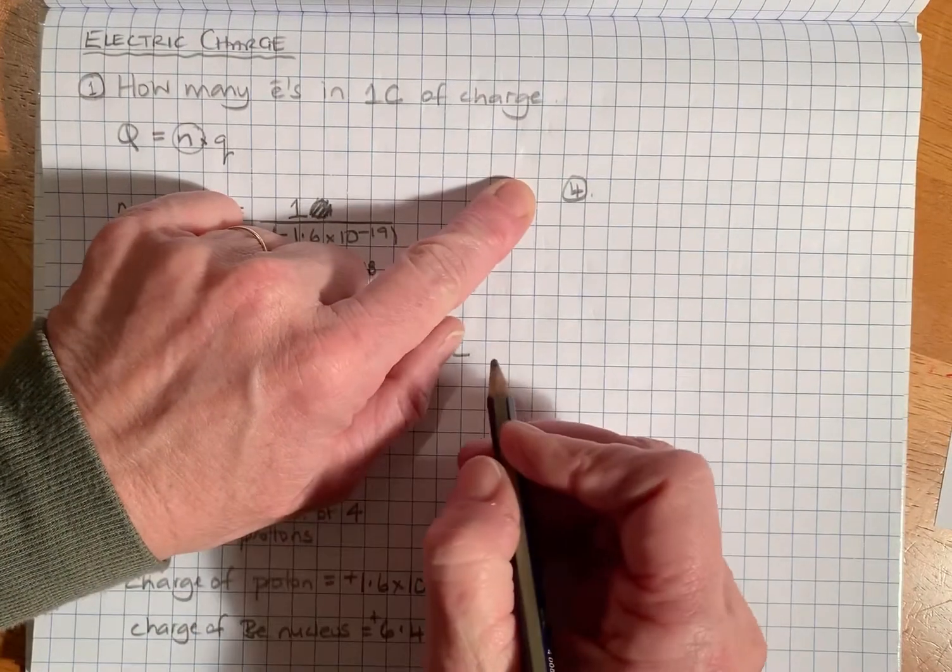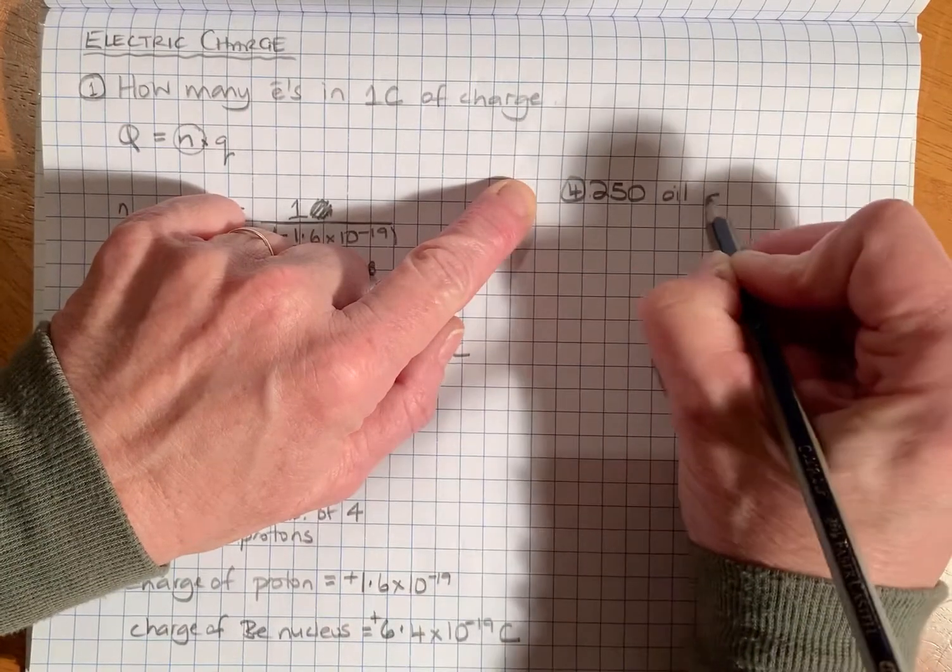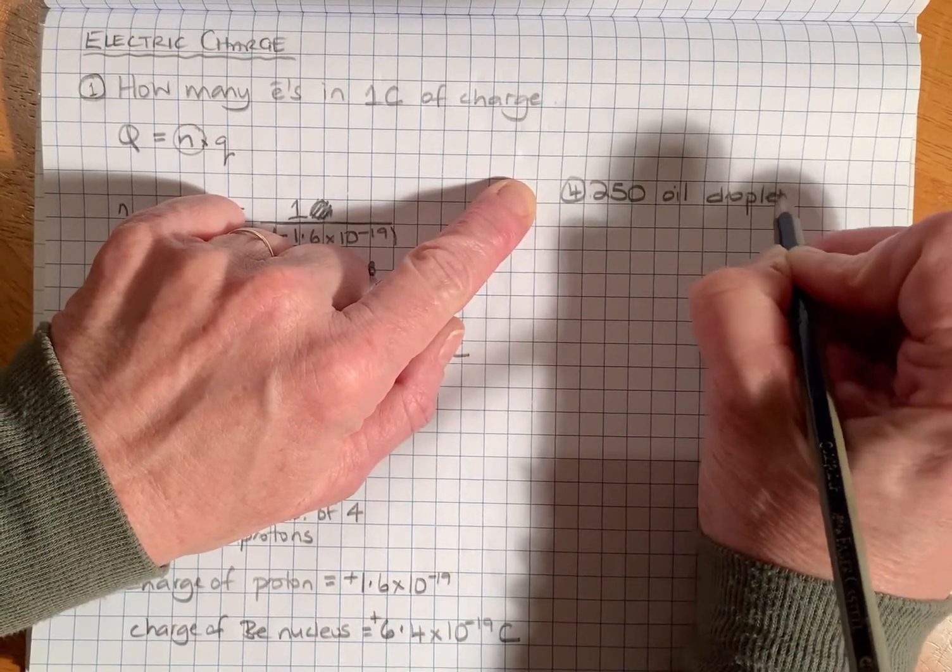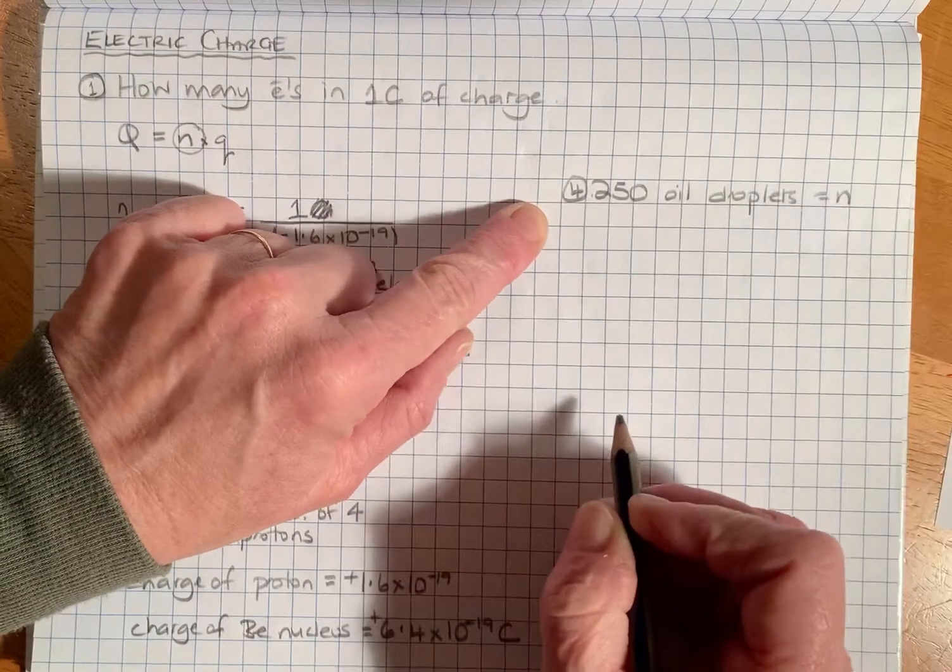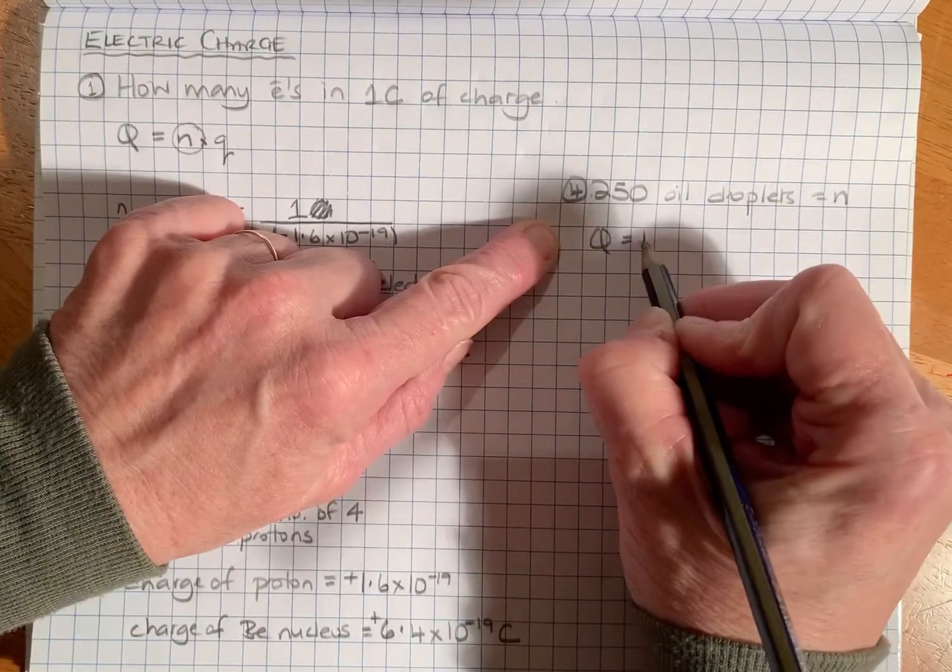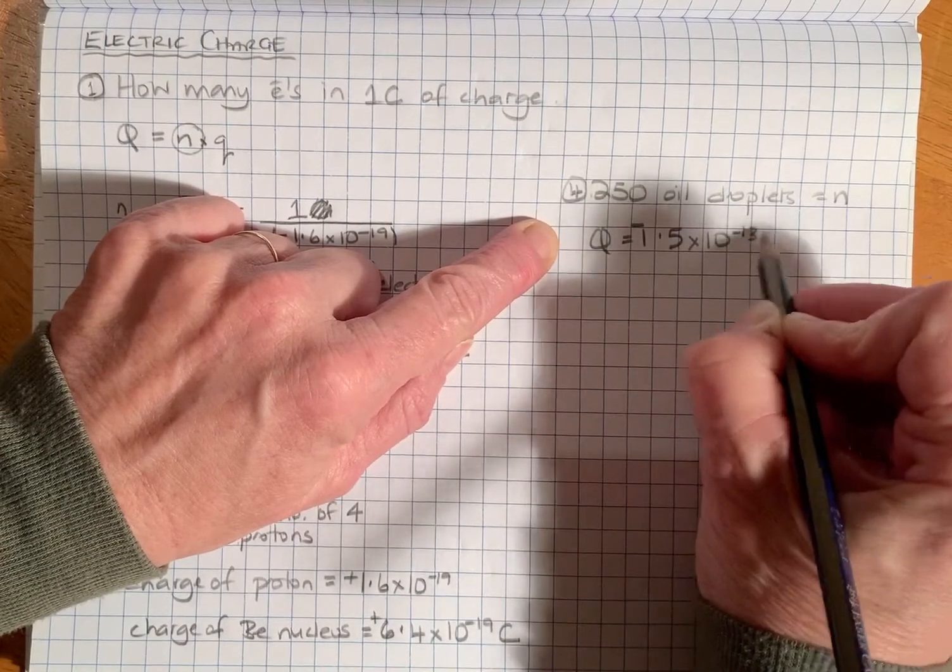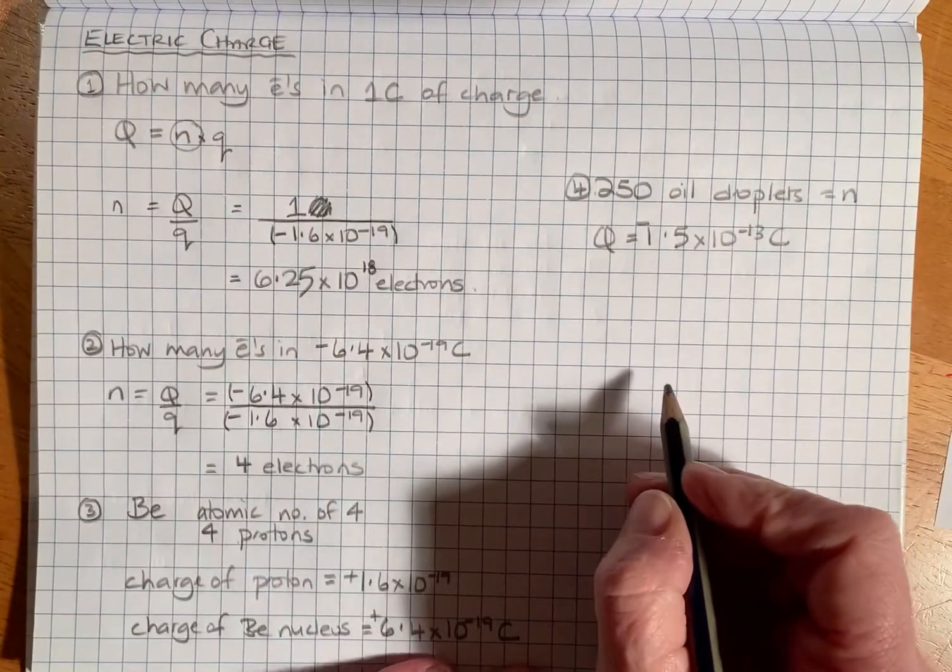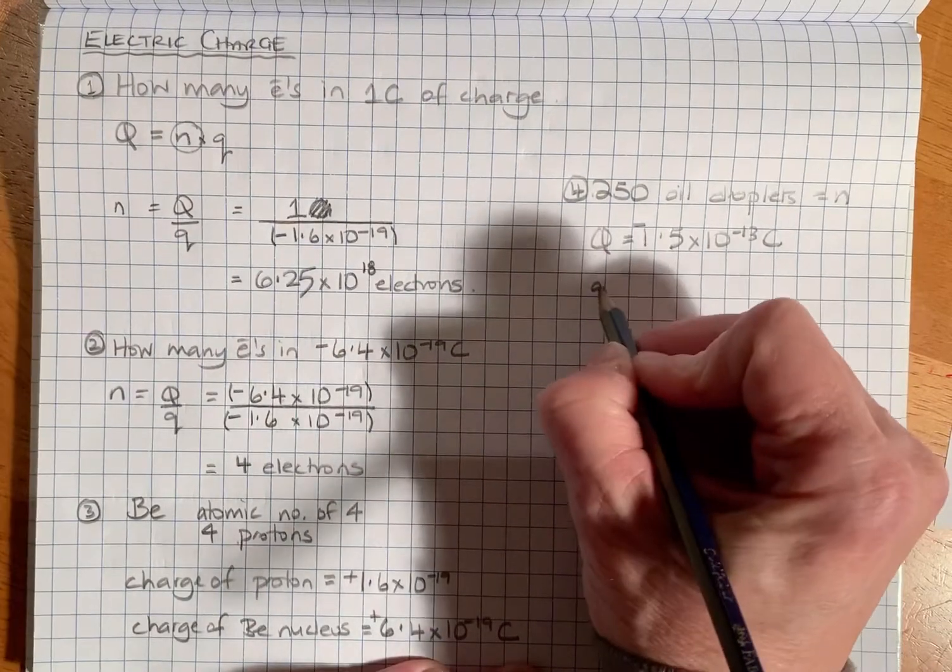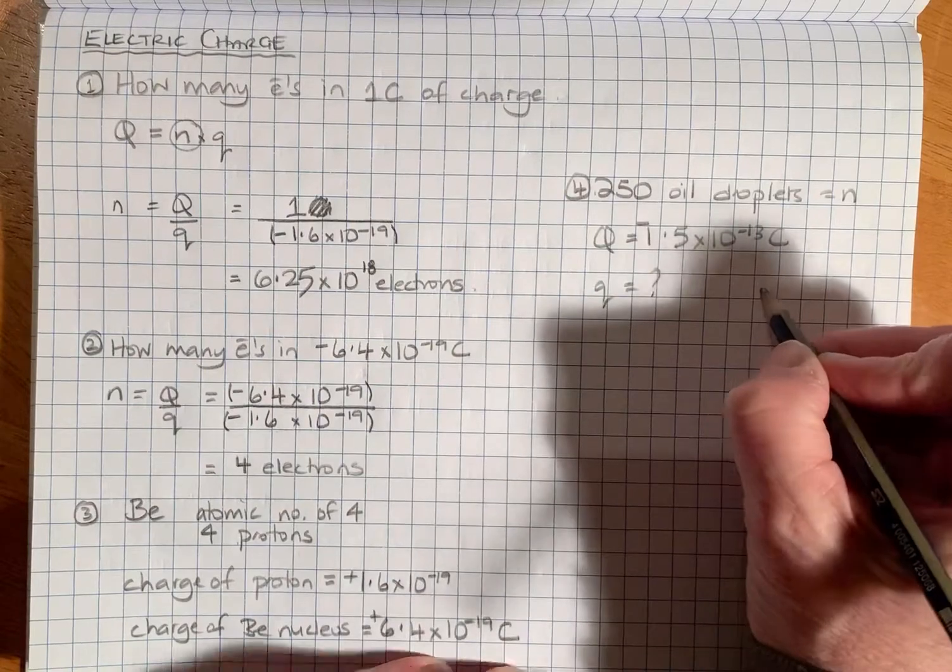Lastly, question four says 250 oil droplets, and that will be our number of particles n, has a charge of -1.5 times 10 to the minus 13 coulombs. What is the charge on one oil drop? This time we're finding little q.